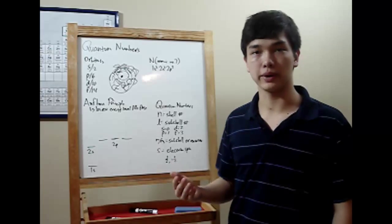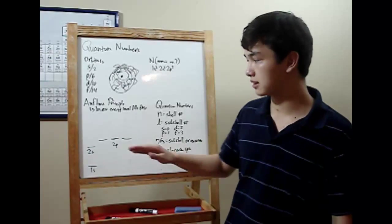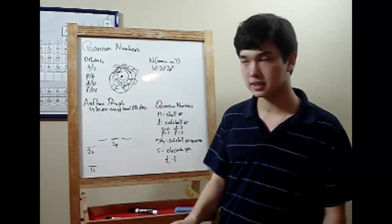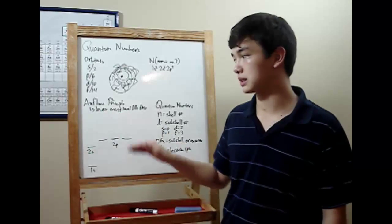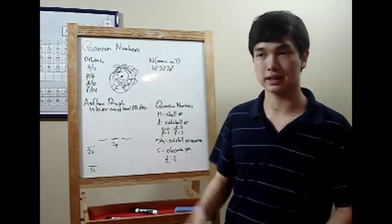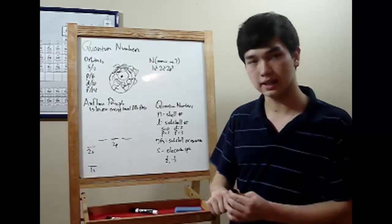Quantum numbers will allow you to pinpoint an electron, but in order to use them, you have to fill out a chart kind of like this one. When you do so, remember the Aufbau principle. The lowest energy level will fill with electrons first.